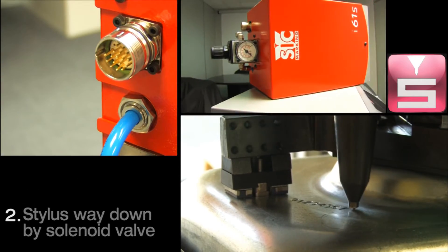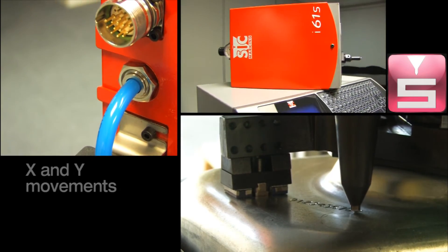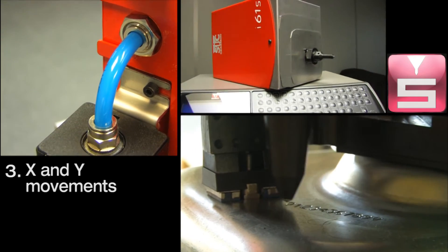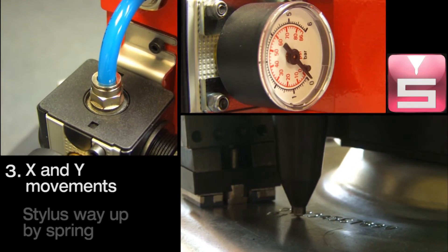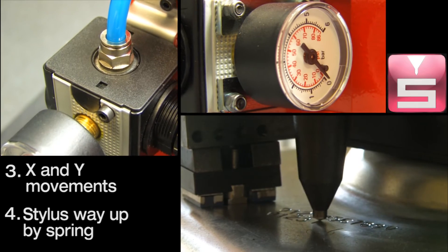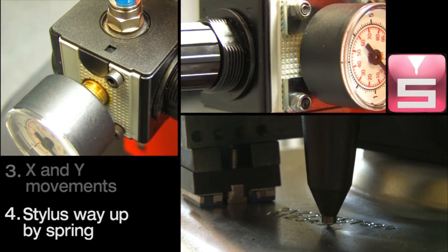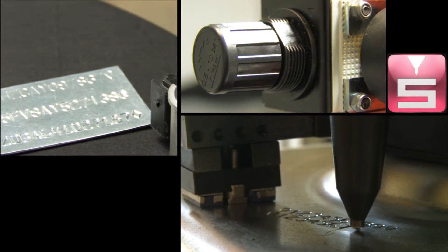Vertical movement of the stylus is controlled pneumatically with a solenoid actuated directional control valve and return spring. The depth of the mark can be adjusted by varying the air pressure.